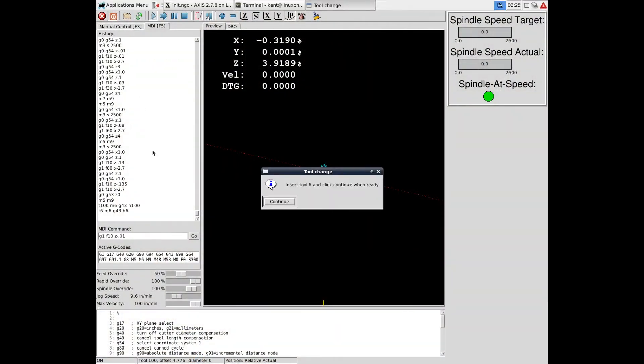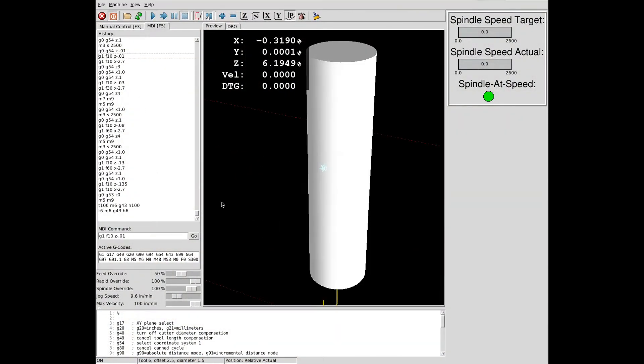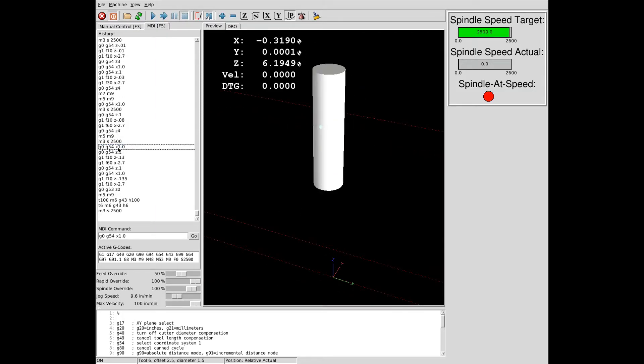After finding the stock's height relative to the probe's length, we can switch tools to the face mill we just measured and not need to touch off again. The TTS tool holders use the spindle nose as a common reference datum.